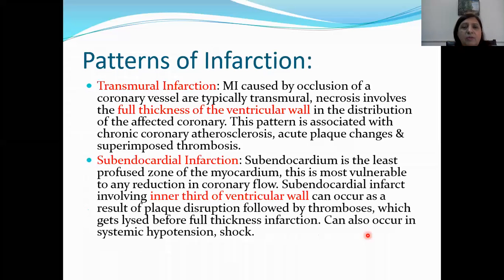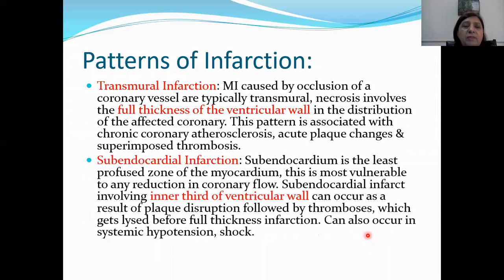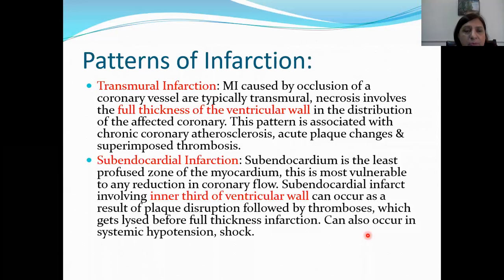Transmural infarction is caused by occlusion of a coronary vessel where necrosis involves the full thickness of the ventricular wall in the distribution of the affected coronary artery. This pattern is associated with coronary atherosclerosis, acute plaque rupture, and superimposed thrombosis.